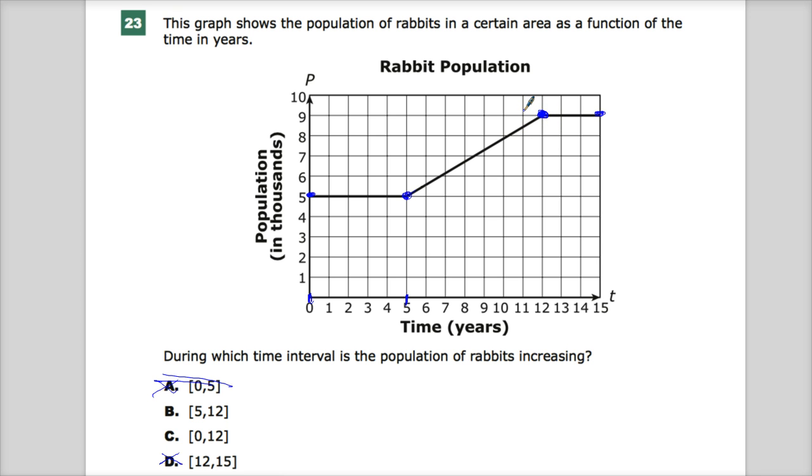So when they ask this question and they give you two answers that can be a little bit questionable, like which one do you really pick? Because the average rate of change from 0 to 12 is an increase. The problem is, it's not constantly increasing, and they want to know during which time interval is the population increasing. So here it's not increasing at all. So I'm going to go with the thing that sells that story as much as possible, which is from 5 to 12. So my answer for number 23 is B.